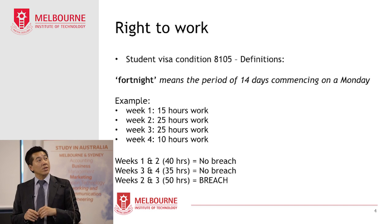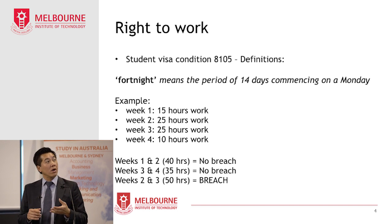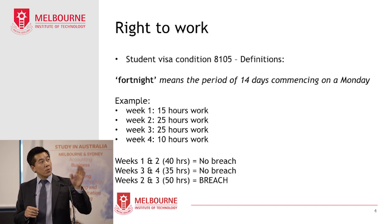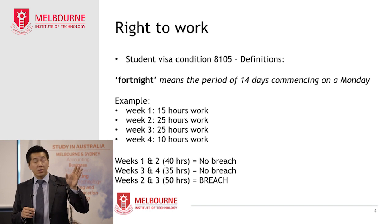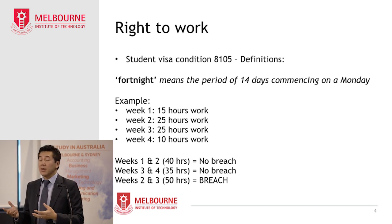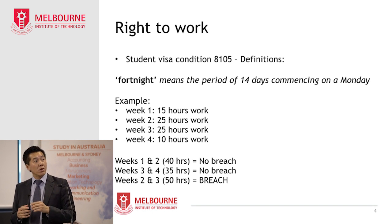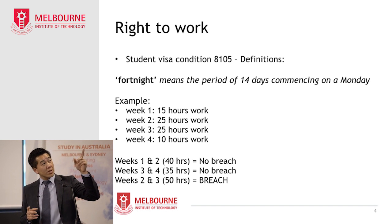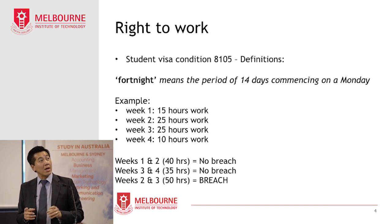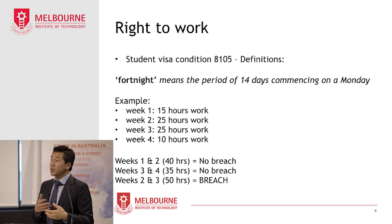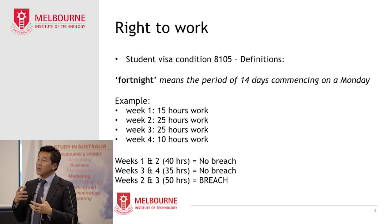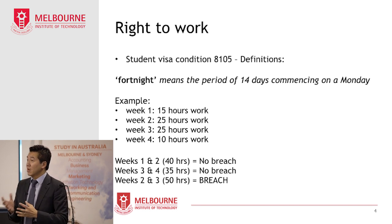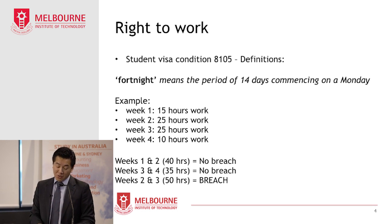Week 1: 15 hours. Week 2: 25 hours. Week 3: 25 hours. Week 4: 10 hours. In this example, for the fortnight comprising weeks 1 and 2, there's a total of 40 hours — so there's no breach. Likewise, for weeks 3 and 4, which total 35 hours, there's no breach. However, for the fortnight comprising weeks 2 and 3, there's 50 hours — so that would be a breach. It's important that you realise how the 40 hours per fortnight is calculated in practice, so you can comply with your student visa condition.